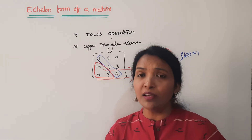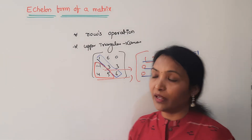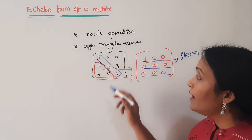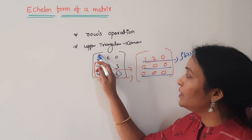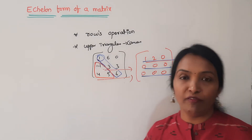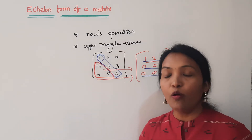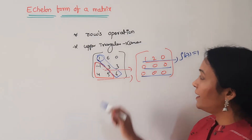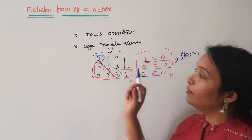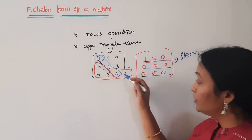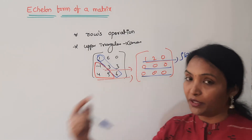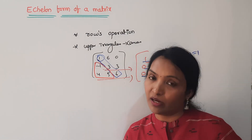A very simple concept: the diagonal element should not be 0. Remember that point. First row, first element should be 1. Second row, second element should be 1. Third row, third element should be 1.